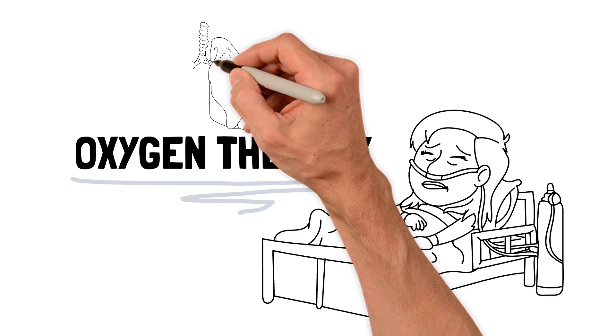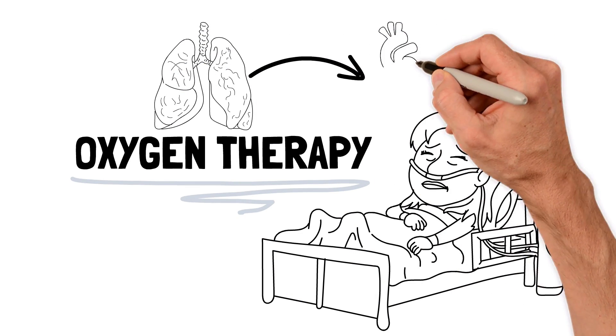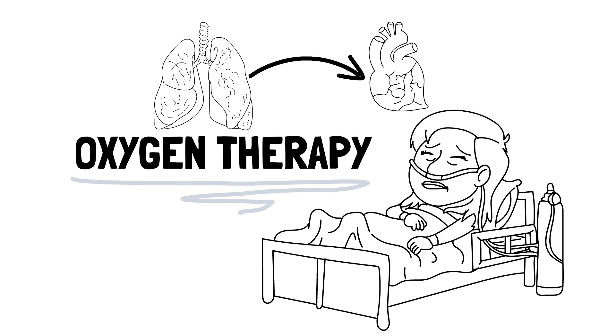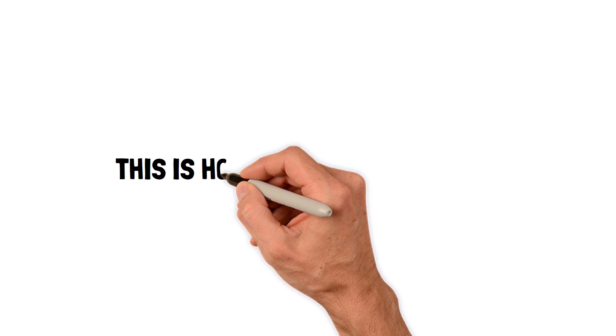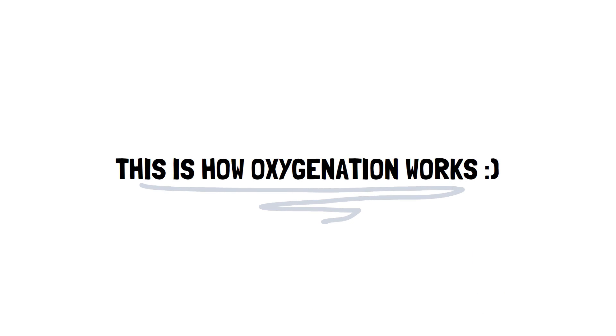As you breathe in more oxygen, the molecules move from the lungs to the heart, where it is pumped via arterial blood to the tissues of the body. This is the simplified process of oxygenation.